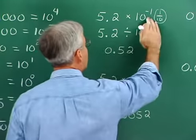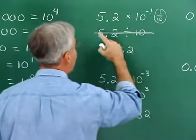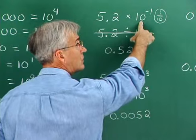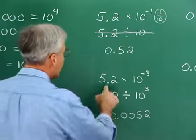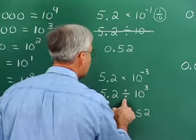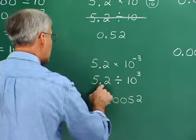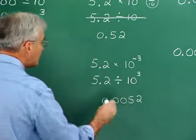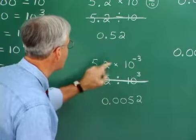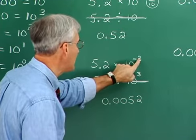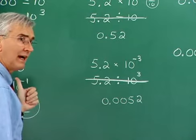When we have a negative exponent, we slide the decimal to the left. So 5.2 times ten to the negative three means 5.2 divided by ten cubed, or 1,000. Dividing by 1,000 moves the decimal to the left three places — one, two, three — and we need a couple of placeholders. Multiplying by ten to the negative three means we move the decimal point to the left. If it were positive three, we'd move it to the right; but it's negative three, so we move it to the left.